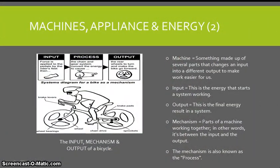Now we're looking at the input, mechanism, and output of a bicycle. A machine is something made up of several parts that change its input into different output to make the work easier for us. The input is the energy that starts the system working. So the input is the force applied to the pedals by the rider's feet. The output is the final energy result in a system. The mechanism are the parts of the machine working together. In other words, it's between the input and the output. And the mechanism is also known as the process.